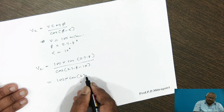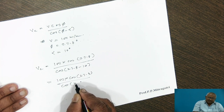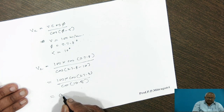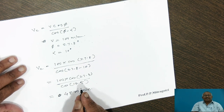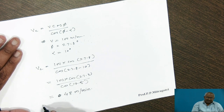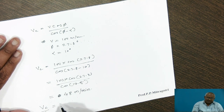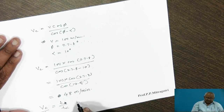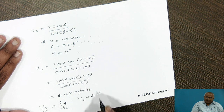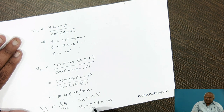100 into cos 27.8 divided by cos 17.8, which comes out to be 48 meters per minute. This chip velocity can also be calculated by the formula Vc upon V equals T upon Tc, meaning Vc equals R into V, so Vc equals 0.48 into 100, which is tallied at 48 meters per minute.